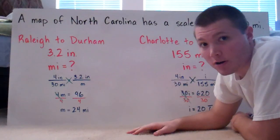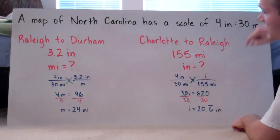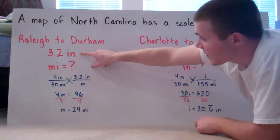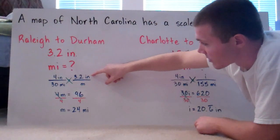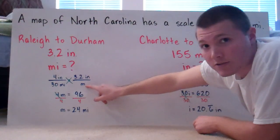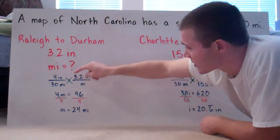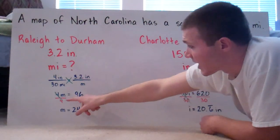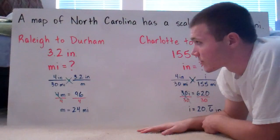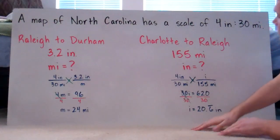We have our first ratio: four inches over 30 miles. We set that equal to our new ratio. Since inches is on top, 3.2 inches goes on top, and we solve for miles (m). Cross multiplying: 4 times m is 4m, and 30 times 3.2 is 96. Dividing both sides by four, m equals 24 miles — that's how far apart Raleigh is from Durham.